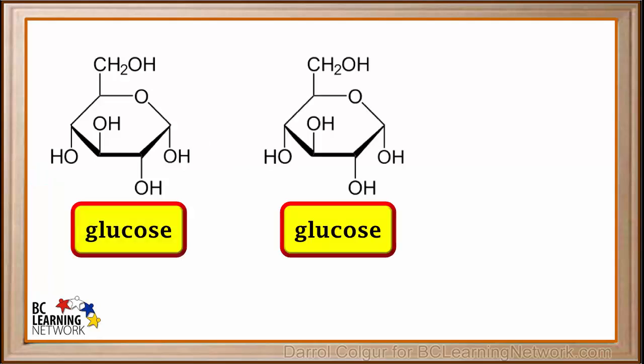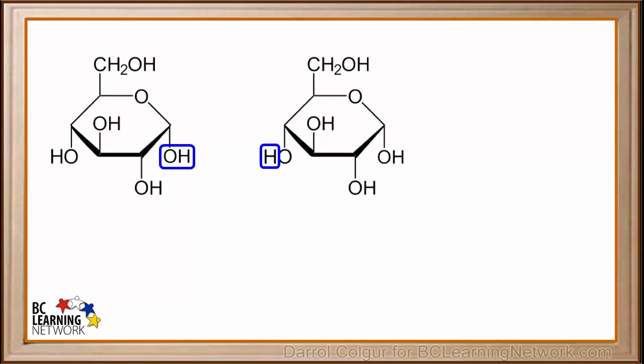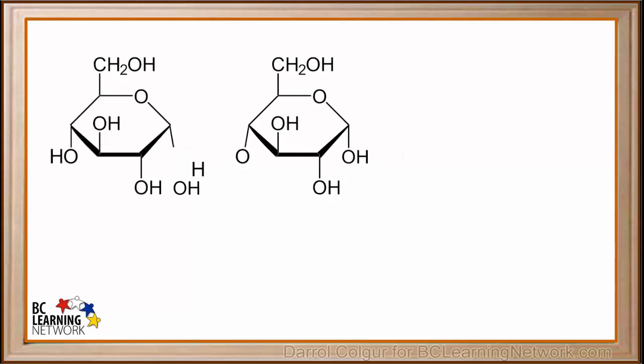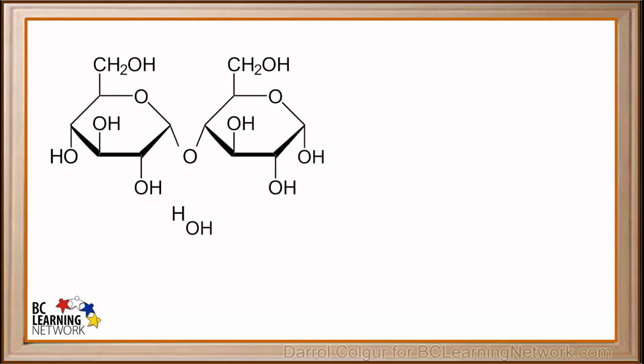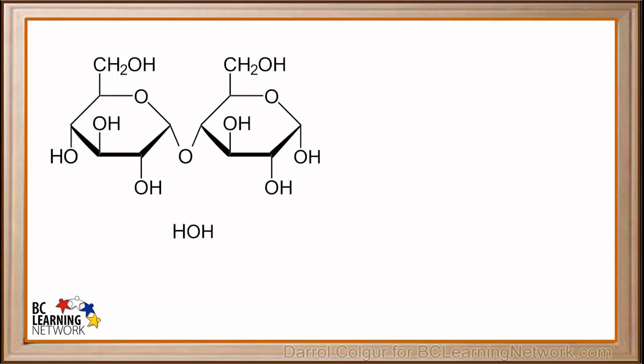Here are two glucose units. We'll consider this OH on the first glucose molecule and this H on the second glucose molecule. An enzyme in plants enables two glucose molecules to join together. We can imagine the H and the OH coming off and the two molecules moving together. The actual mechanism for this is much more complex and involves enzymes. The simplified animation here just helps us visualize how the two glucose molecules can bond together.